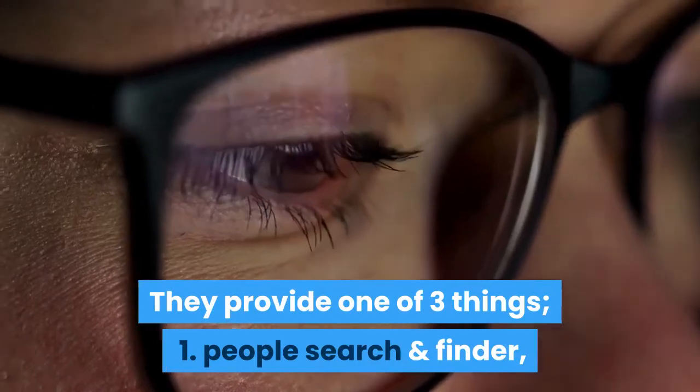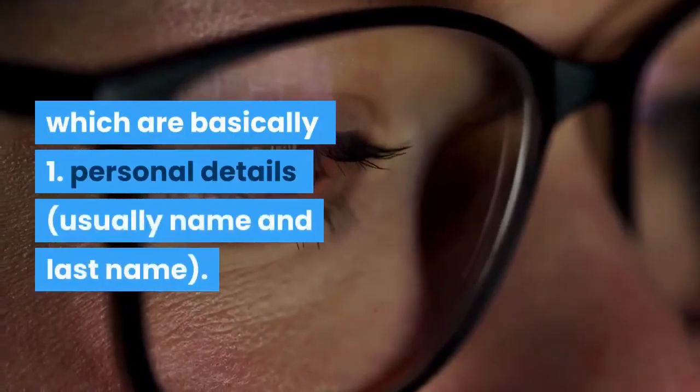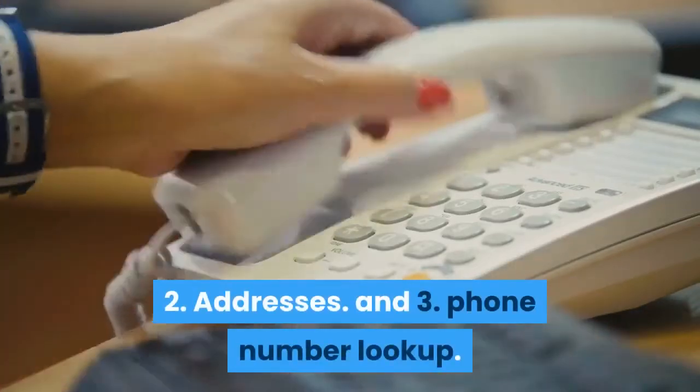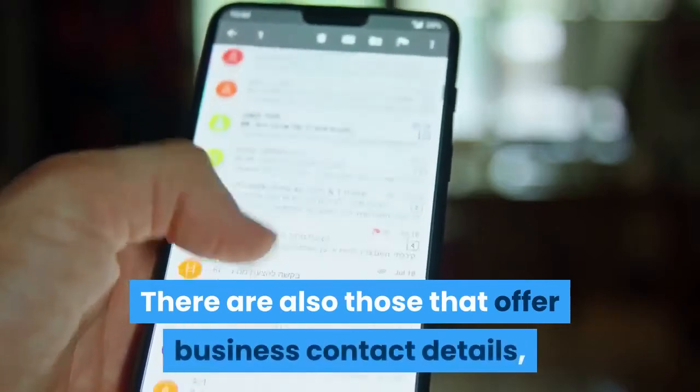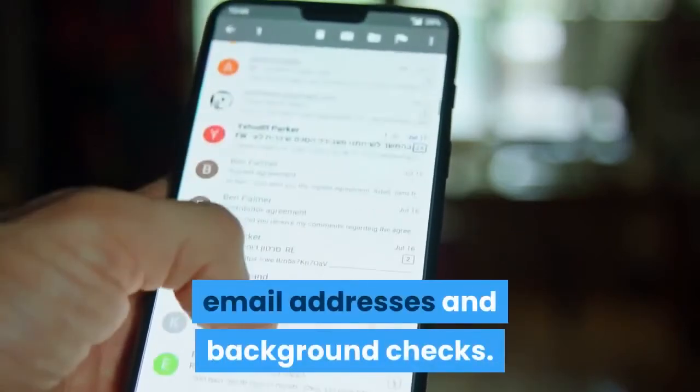One, people search and finder, which are basically personal details, usually name and last name. Two, addresses. And three, phone number lookup. There are also those that offer business contact details, email addresses and background checks.